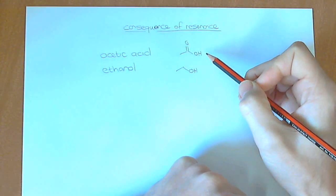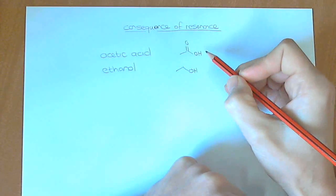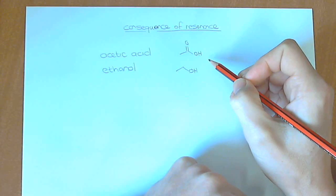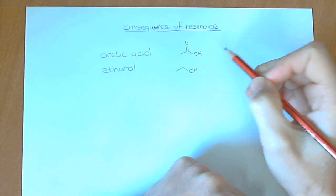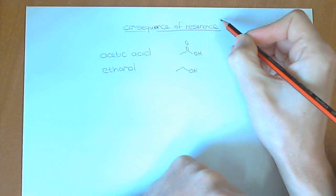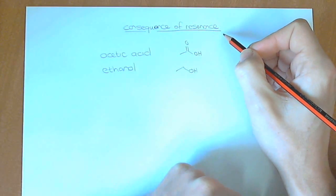Now the clue is a little bit in the name that acetic acid is a carboxylic acid, and that it is an acidic organic molecule. And the reason it's acidic is primarily because of resonance.